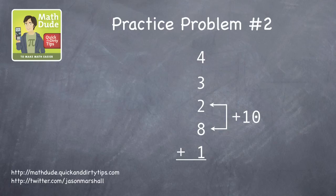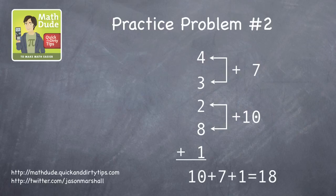Also, look for pairs of numbers that add to less than 10. 4 plus 3 equals 7, for instance. It's just faster to do it this way, so 10 plus 7 plus 1 is 18.